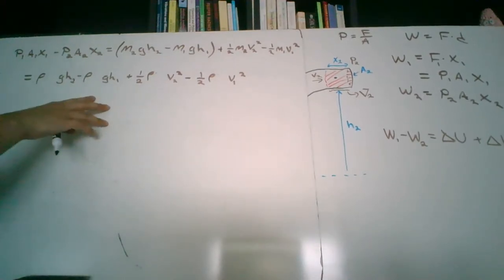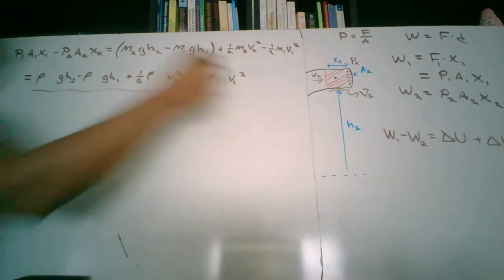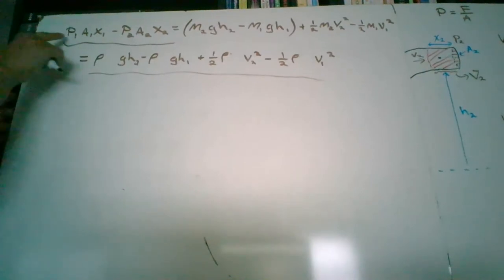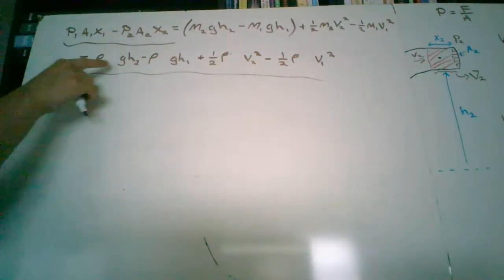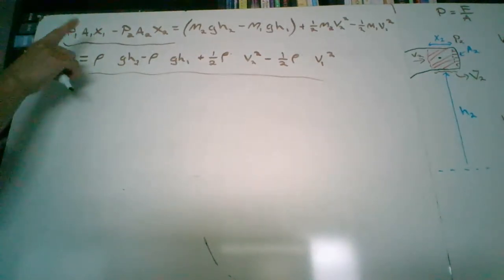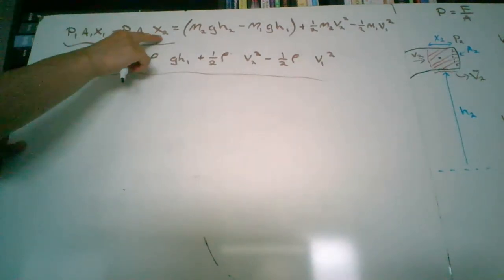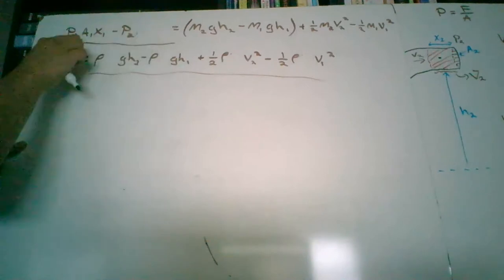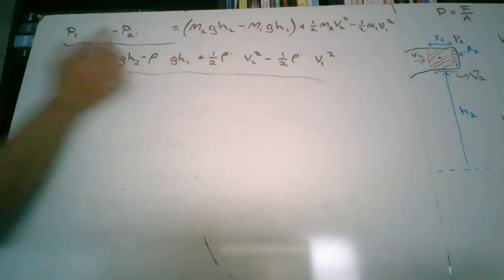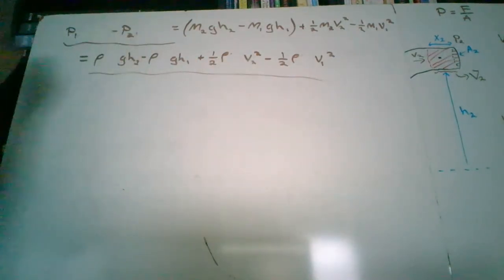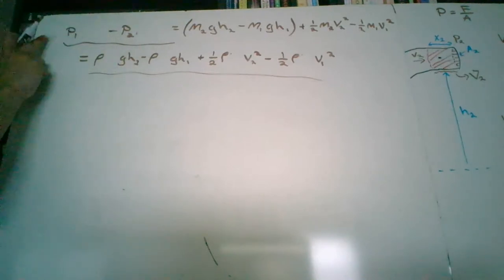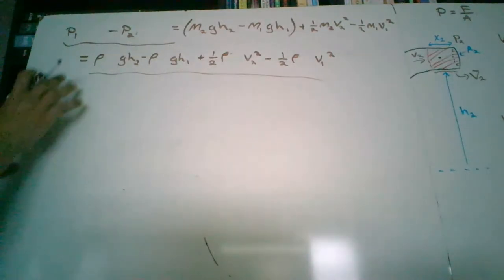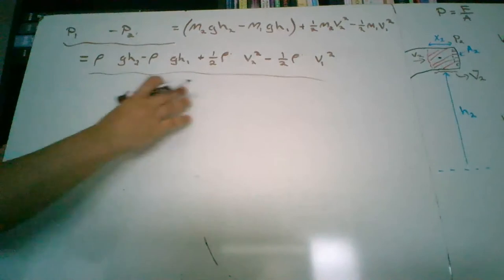We know that the left side (the work terms) equals the right side (the energy terms). And A2·x2 is volume, so that term on the left goes away. A1·x1 is also volume, so that goes away too. We divide volume from both sides. So we're left with pressure 1 minus pressure 2 equaling all the remaining energy terms. Then we separate the variables: all the 1-subscript terms on one side, all the 2-subscript terms on the other.